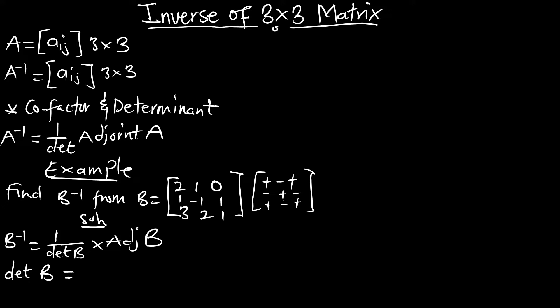The first element is going to be a positive number, and the sub-2x2 matrix is going to be 1, 0, -1, 1. We've tackled how to find the determinant of a 3x3 matrix — you can check out that episode. The second one is going to be negative 2, multiplying the 2x2 matrix, which is 2, 0, 1, 1.